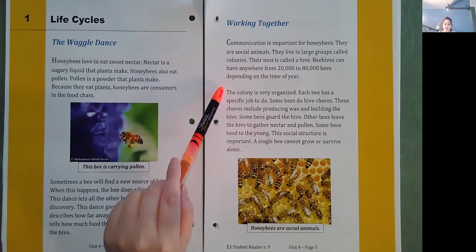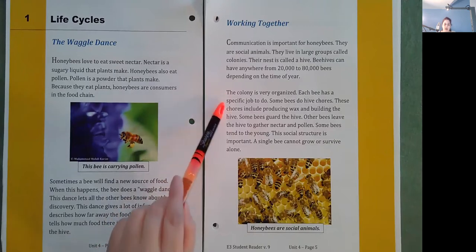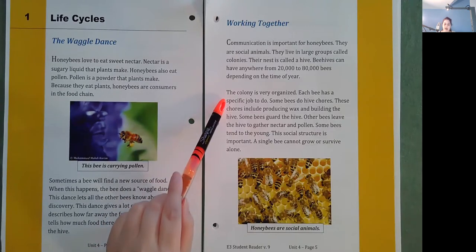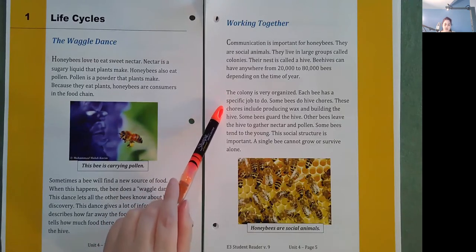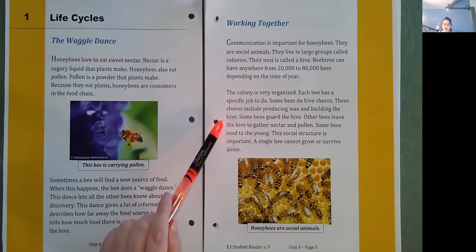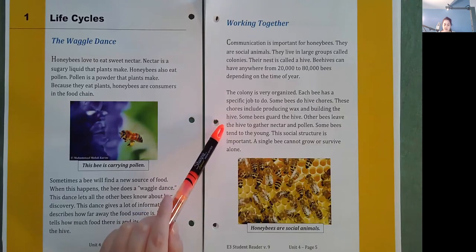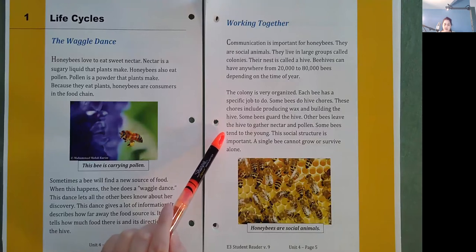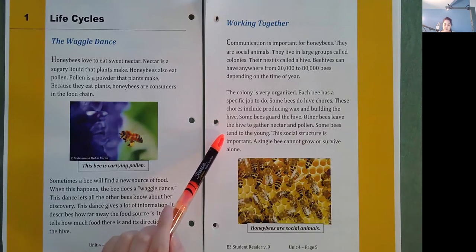The colony is very organized. Each bee has a specific job to do. Some bees do hive chores. These chores include producing wax and building the hive. Some bees guard the hive. Other bees leave the hive to gather nectar and pollen. Some bees tend to the young. This social structure is important. A single bee cannot grow or survive alone.